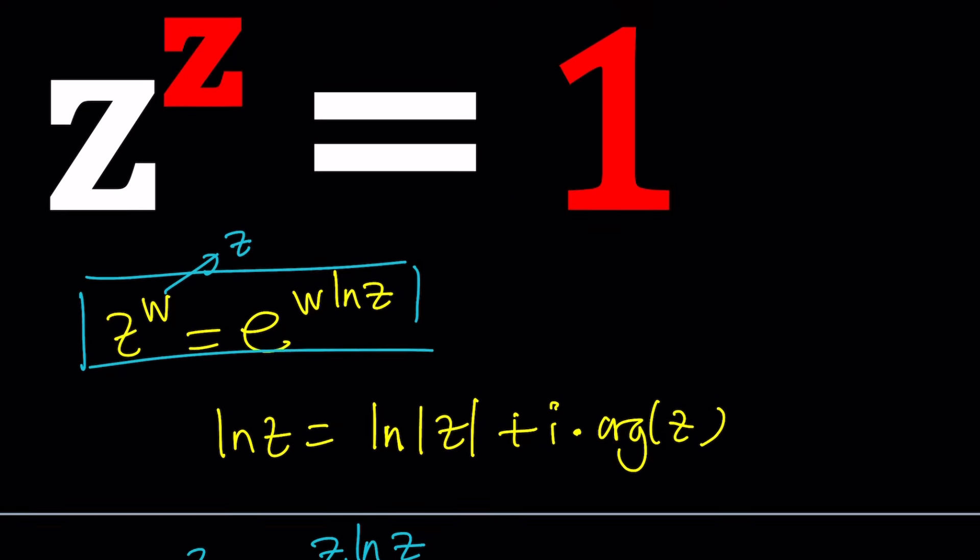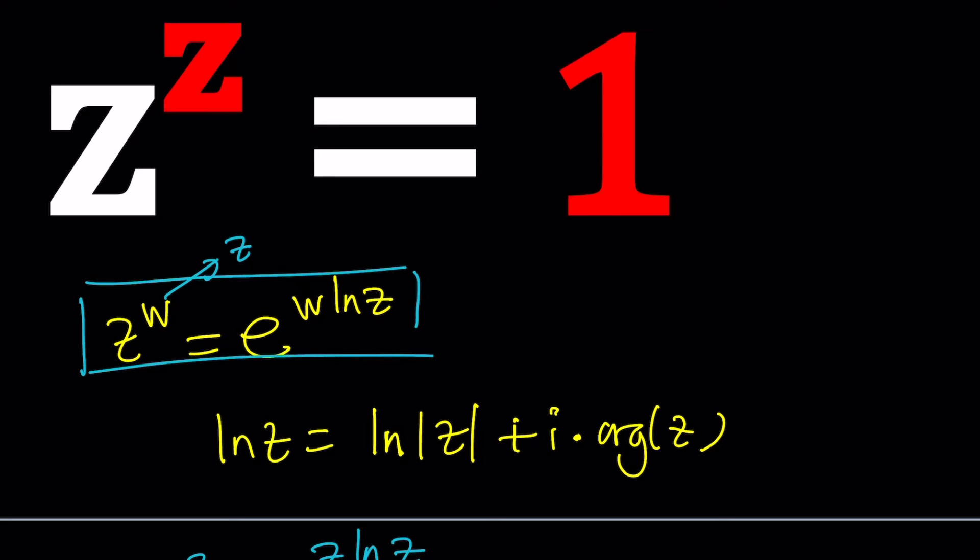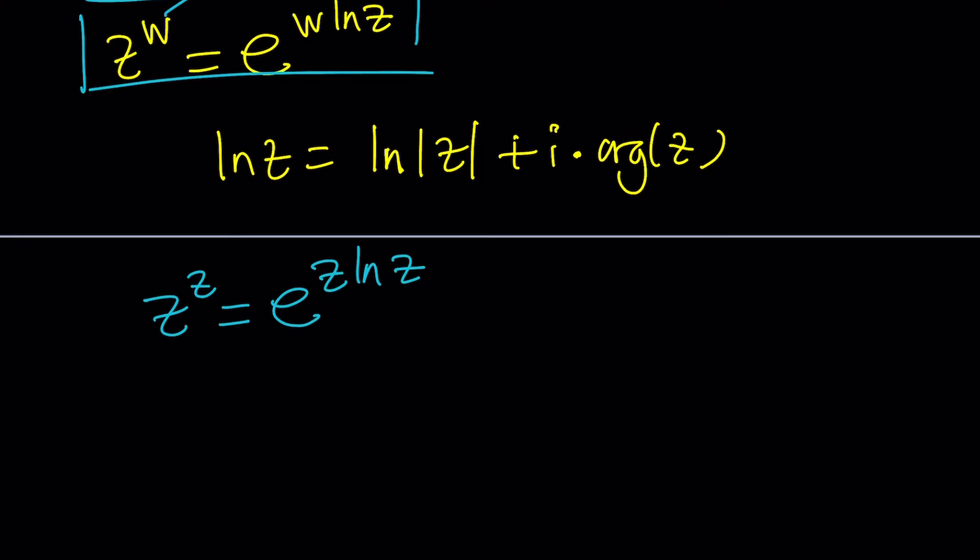Now notice that we have one on the right hand side but that's a complex one, right? So how do you complexify one? You can go ahead and write it as e to the power 2 pi n i because